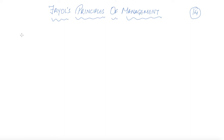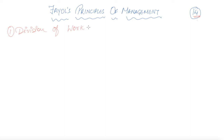Coming towards the basic points and concepts we are going to learn in this class — the principles of Fayol. The first principle: as we discussed, there are 14. So the first out of 14 principles is Division of Work and Specialization.